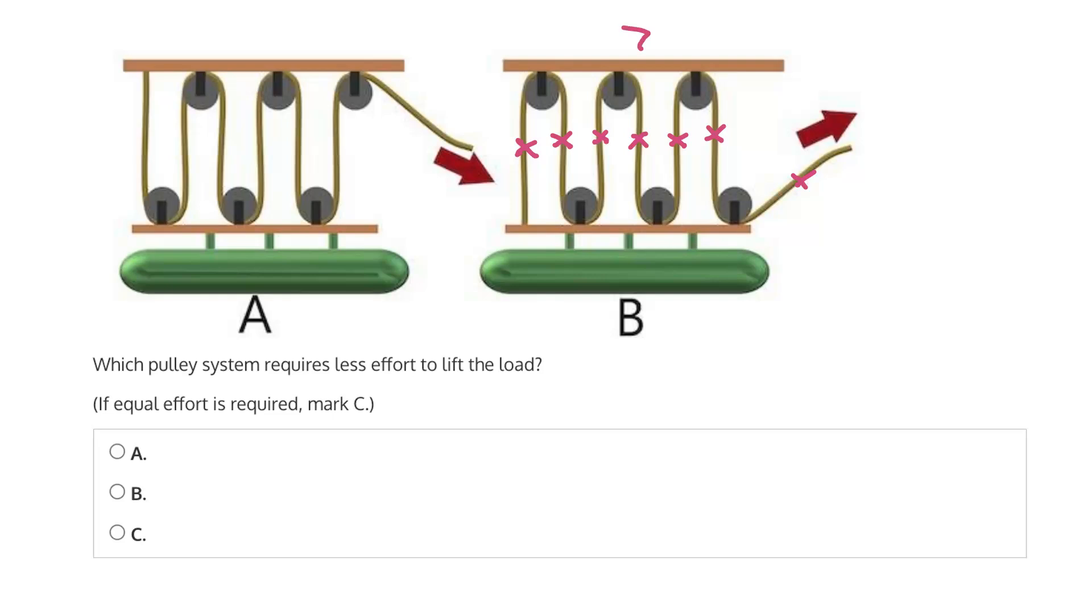So, B has 7 ropes that are involved in lifting the load. And this 7th rope is included, because tension is acting upwards. So, this is involved in helping to lift the load.